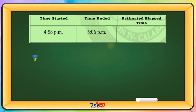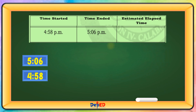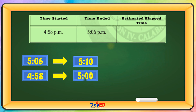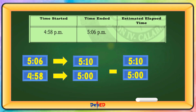From 4:58 to 5:06 — round off to the nearest tens: 5:06 becomes 5:10, and 4:58 becomes 5:00. Then, 5:10 minus 5:00 equals 10 minutes.